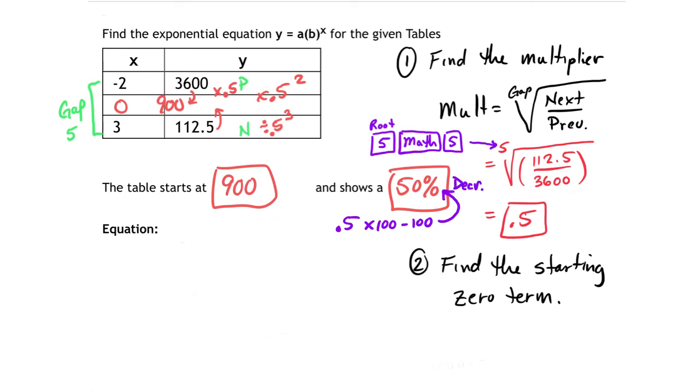Next, what is the equation? The equation of this problem is going to be y equals, what are you starting at? 900. What are you multiplying by? 0.5 to the power of x. And it's that simple.